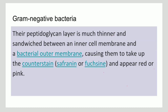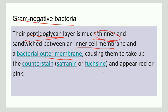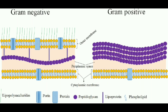A Gram-negative bacteria also has a peptidoglycan layer, but it is much thinner than in Gram-positive bacteria. This layer is sandwiched between the inner cell membrane and outer membrane. Hence, Gram-negative bacteria take up the counter stain used in Gram staining and appear red or pink in color.